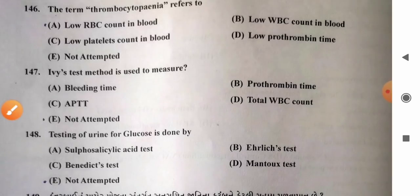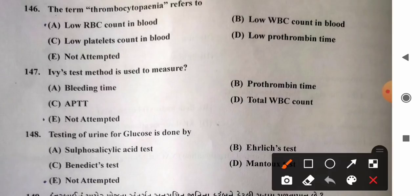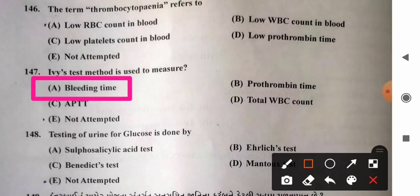Question 147: Ivy's test method is used to measure — options: A) bleeding time, B) prothrombin time, C) APTT, D) total WBC count. Ivy's method is used to measure bleeding time. So option A, bleeding time, is the correct answer.